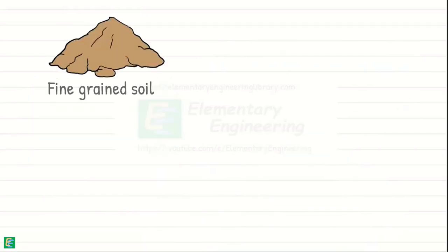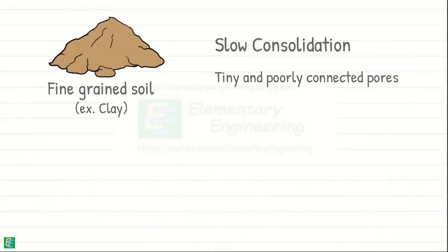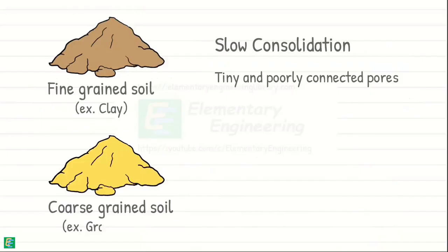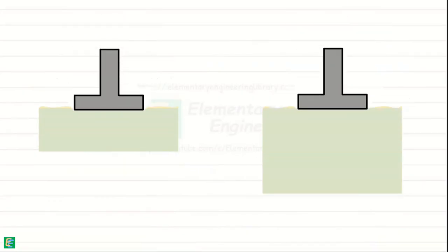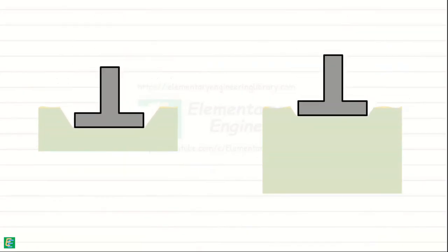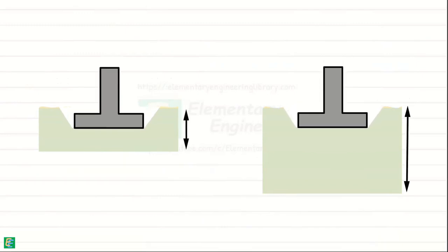Fine-grained soils like clay experience slow consolidation because water has difficulty flowing through tiny, poorly connected pores. Conversely, coarse-grained soils such as sand or gravel consolidate much faster due to their high permeability, which allows water to escape easily. Also, the thicker the soil layer, the slower will be the rate of settlement due to consolidation, as water has to travel a longer distance through the pores.